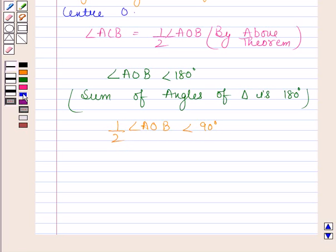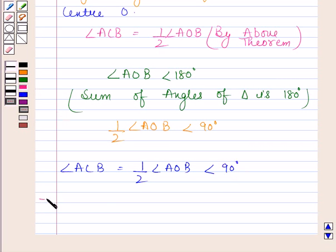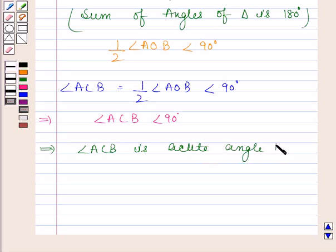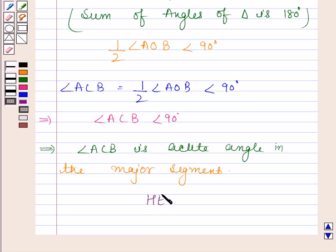Now, angle ACB is equal to half of angle AOB, and half of angle AOB is less than 90 degrees. So we have angle ACB less than 90 degrees. This implies angle ACB is an acute angle in the major segment. So we have proved that the angle formed by a chord in the major segment is acute.